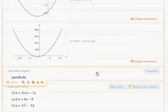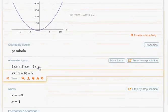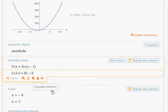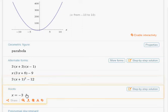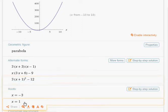Sometimes you get lucky and it puts it in factored form. Here it is in factored form. It also gives me some alternative forms. You may understand this one to be vertex form right there. And here are my roots or my zeros of the equation, negative 3 and 1.